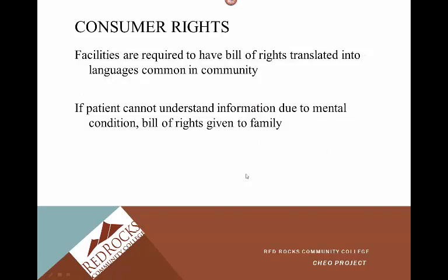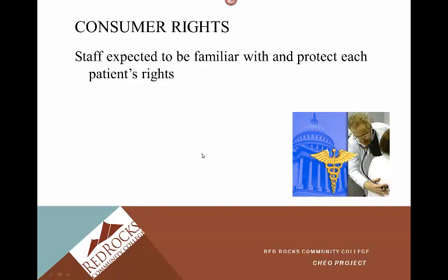Facilities are required to have the bill of rights translated into languages common in the community. If a patient cannot understand the information due to a mental condition, such as end-stage Alzheimer's, the bill of rights is given to the family. Staff is expected to be familiar with and protect each patient's rights. These documents should be available in your workplace — for example, at Colorado Lutheran Home, the resident's rights are displayed as pictures near the fountain room.